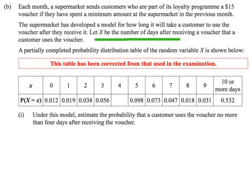They've given us a table of values, so the first thing we need to do is make sure we understand what the table is about. For example, the value at 0 is saying the chance that a person uses the voucher 0 days after they receive it — so using the voucher the same day — and that probability is 0.012. Equally, the value at 3 is the probability that a person uses the voucher 3 days after receiving it, which is 0.056. So the table shows the probability for each number of days after receiving the voucher.